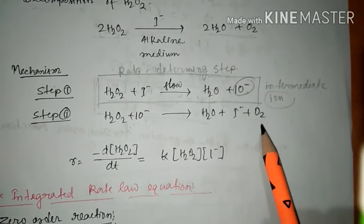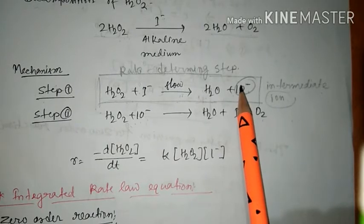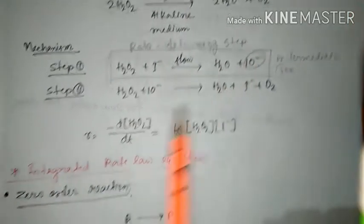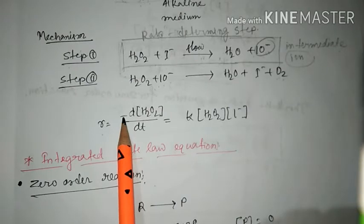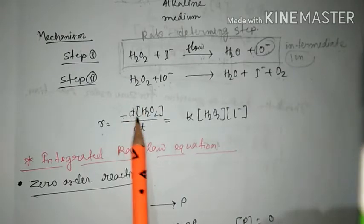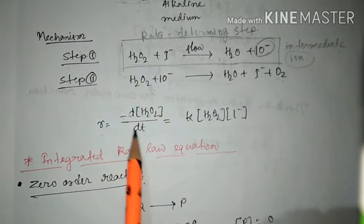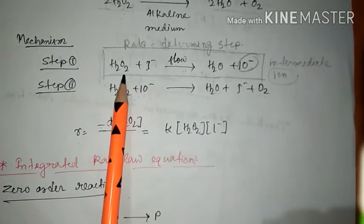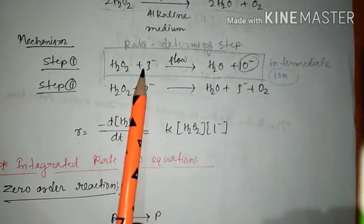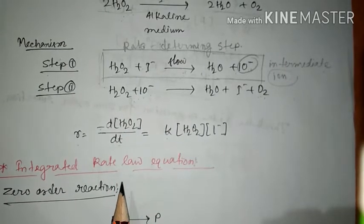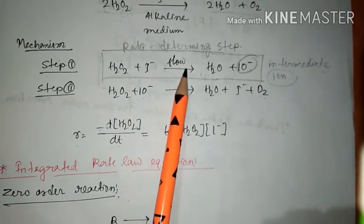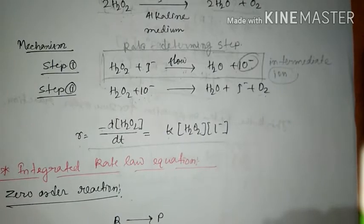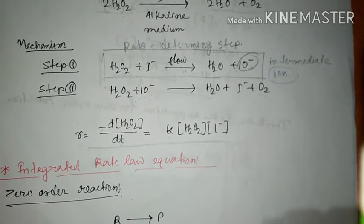As I said, the rate of the reaction depends only on the slow step. That's why the rate equals minus d[H2O2]/dt, which equals k times the concentration of H2O2 times the concentration of I-, which are the species in the slow step. This is a very important concept.